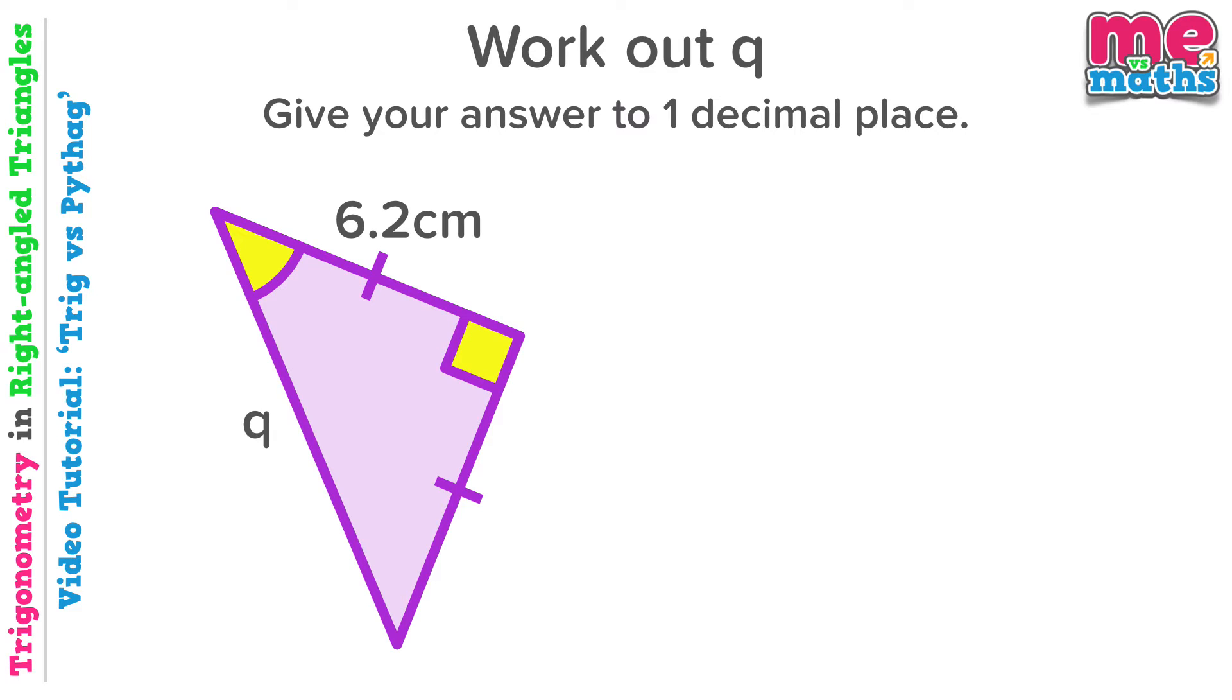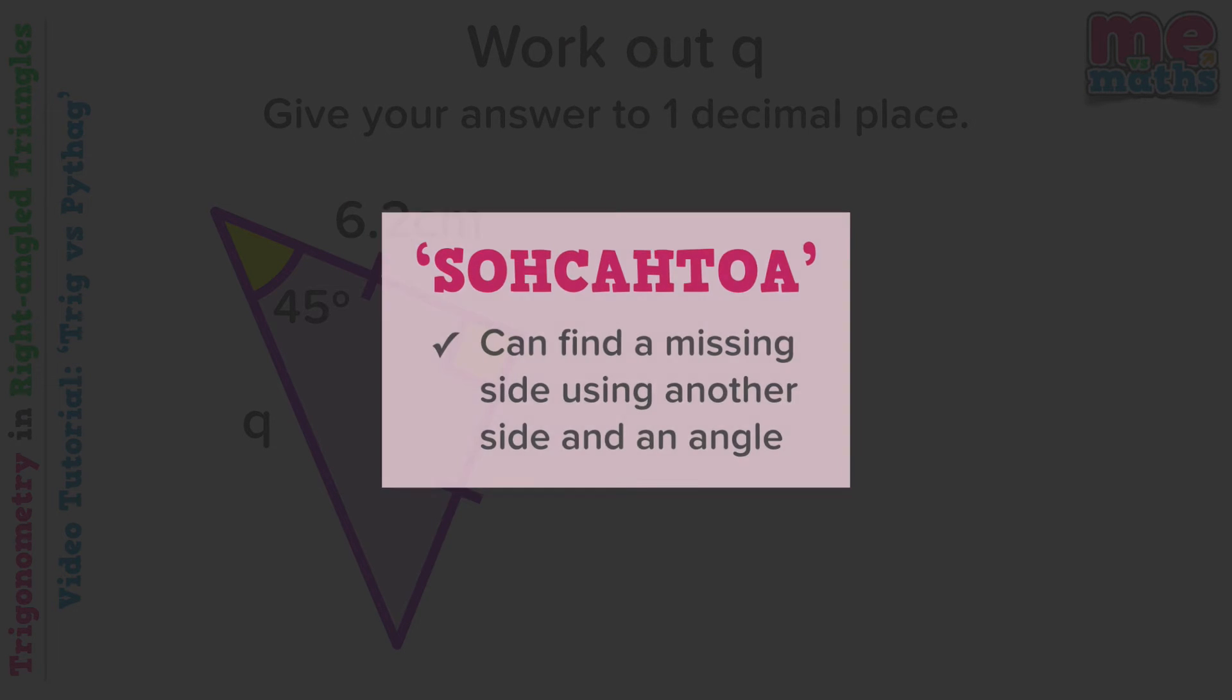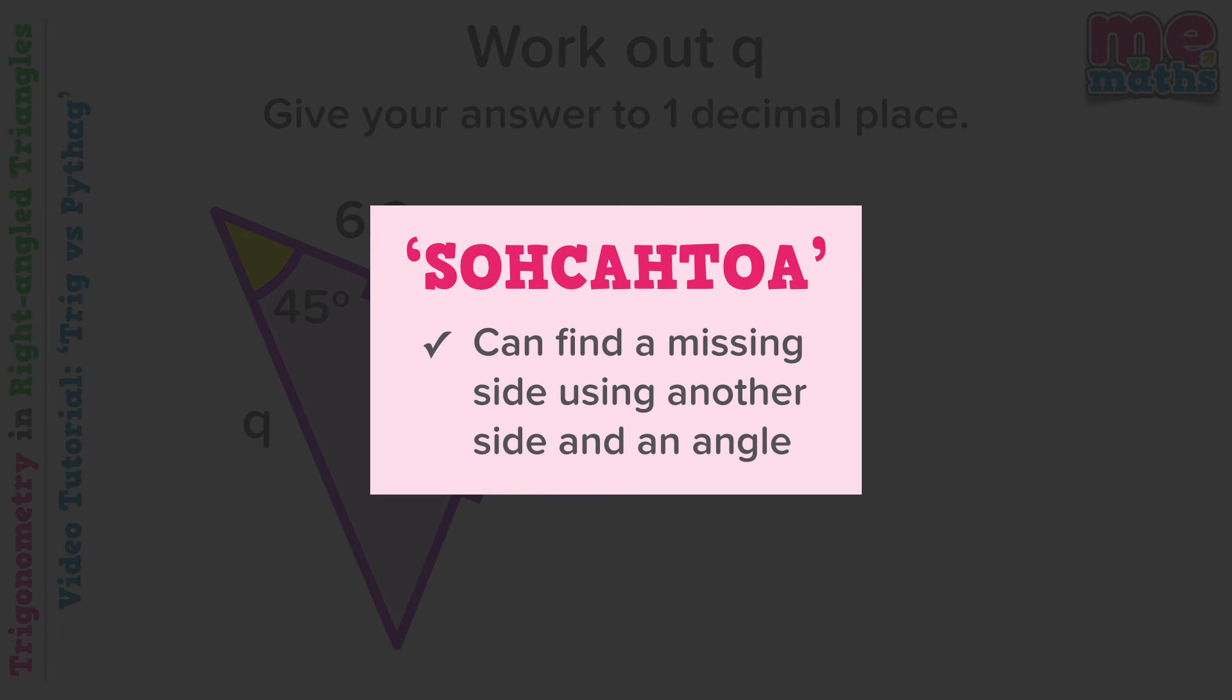Well, if it's an isosceles triangle, the other two angles in this triangle must be the same. As we know angles in a triangle are 180 and it has a right angle in it, so the other two angles must be 45 degrees each.